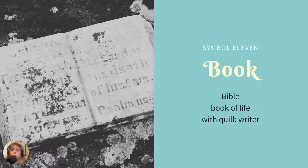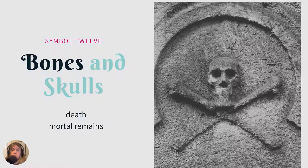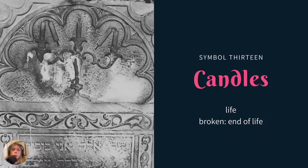A book — this example here is the Bible, as you can see, it's turned to a psalm. If it isn't obviously a Bible and it doesn't have a cross on it, it could just represent the book of life. I also noticed several examples with a book and a quill, which signifies that the person was a writer. Skull and crossbones — no, a pirate is not buried here — it's just a really popular symbol for death and mortal remains, very common throughout several centuries.